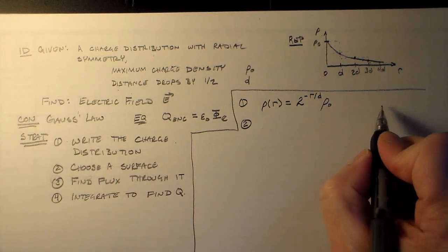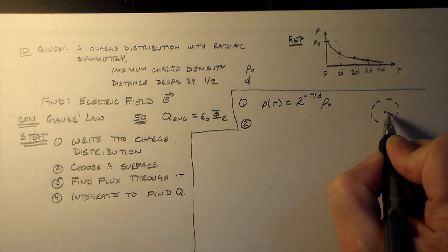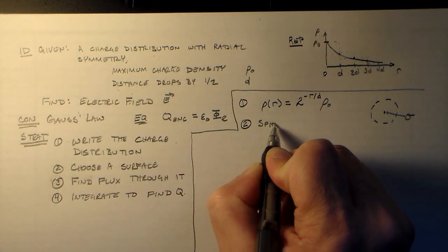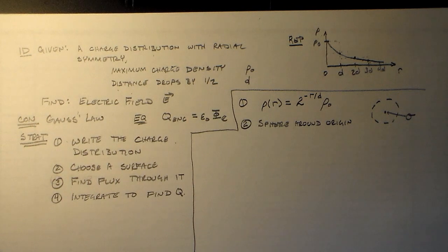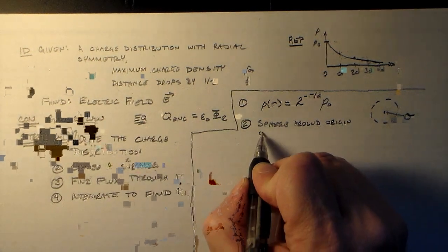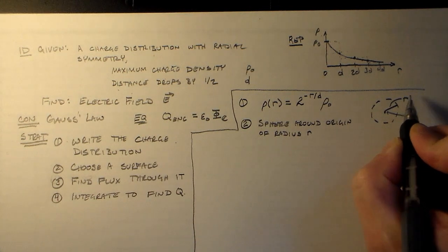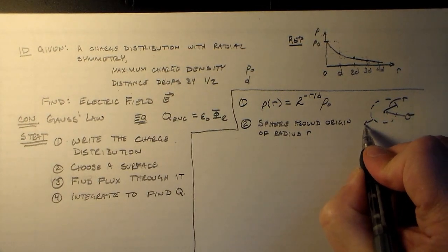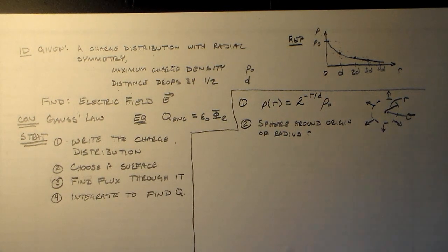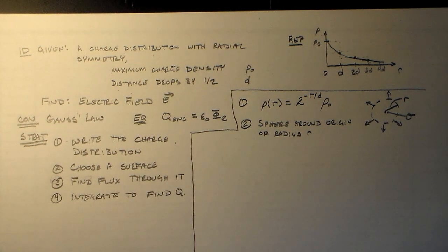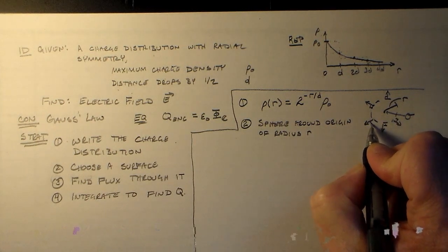Second, we choose a surface. I'll use a sphere centered at the origin, of radius r. Because the distribution is spherically symmetric, the electric field must be spherically symmetric as well. So E always points along the radial normal direction — which is exactly what we need for Gauss's Law.